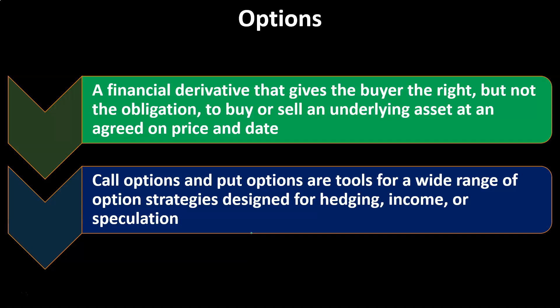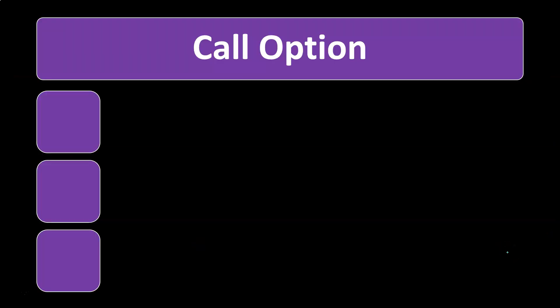We have call options and put options, which are tools for a wide range of option strategies designed for hedging, income, or speculation. People can speculate and try to make money on call and put options. Income generation is also a goal, but they can also be used for hedging to lower the degree of risk.